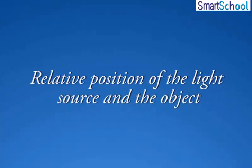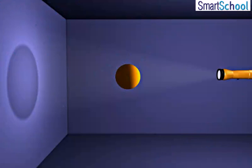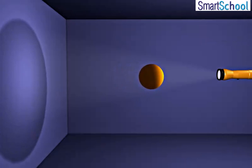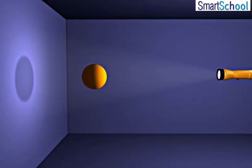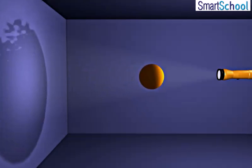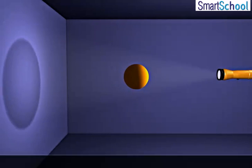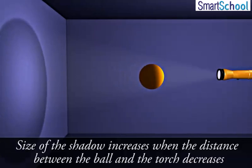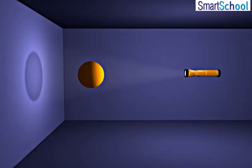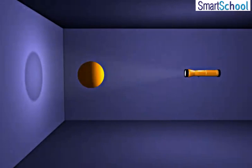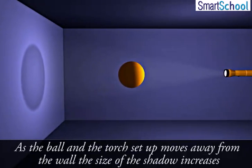Relative position of the light source and the object also affects the shadow. Make a shadow of a ball on the wall of a dimly lit room using a torch as a source of light. Change the distance between the ball and the torch by moving the ball or the torch. We find the size of the shadow increases when the distance between the ball and the torch decreases. Keeping the distance between the ball and torch fixed, move the setup away from the wall — as they move away, the size of the shadow increases.